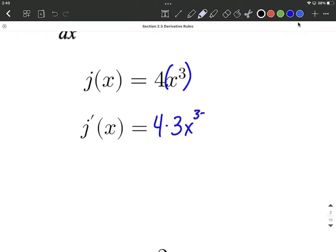So a little bit of simplifying is probably in order here. We have four times three makes twelve, and three minus one makes two. So twelve x squared is going to be the derivative of j of x.